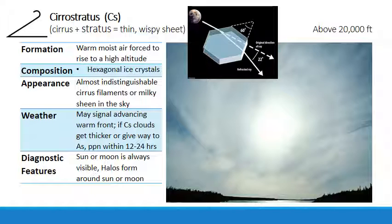Cirrostratus clouds are commonly associated with approaching warm fronts, especially when they get thicker. During multiple sequential observations, or if they descend and thicken, they might turn into altostratus clouds — in those cases, we'll usually see rain begin 12 to 24 hours later.